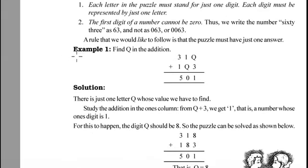Now let us see example 1. Find Q in the addition. The first number is a three digit number and the second number is also a three digit number. The sum of these two three digit numbers is one more three digit number. 31Q plus 1Q3 is equal to 501. Then we will get sum 1 in one's place when we add two numbers. We have given with one number. The one number is 3. We need to find out the remaining number.